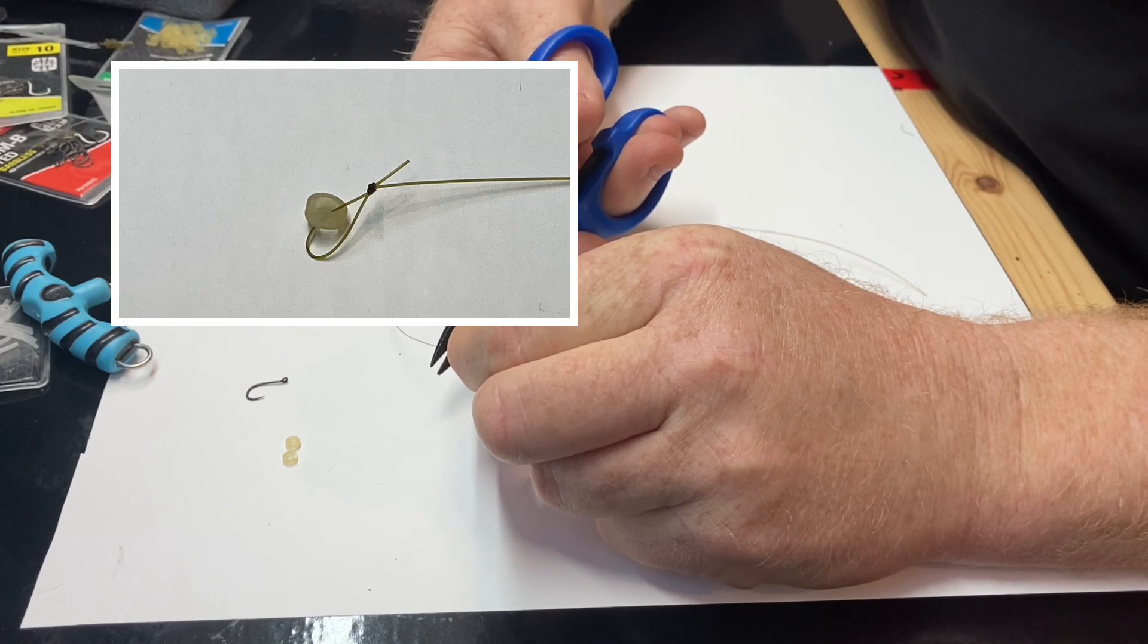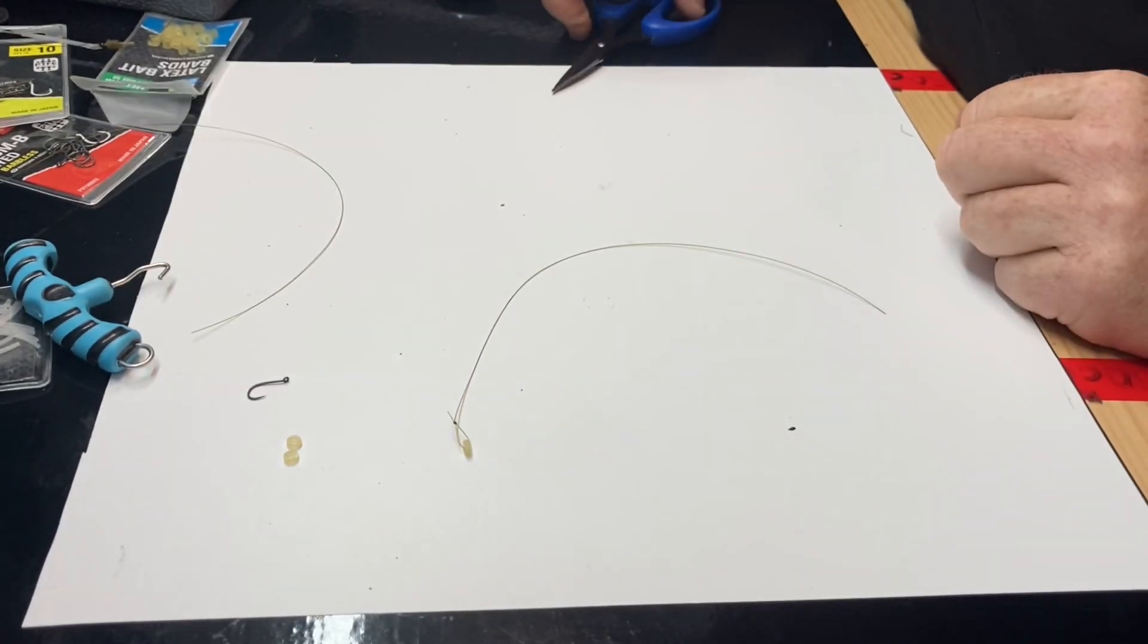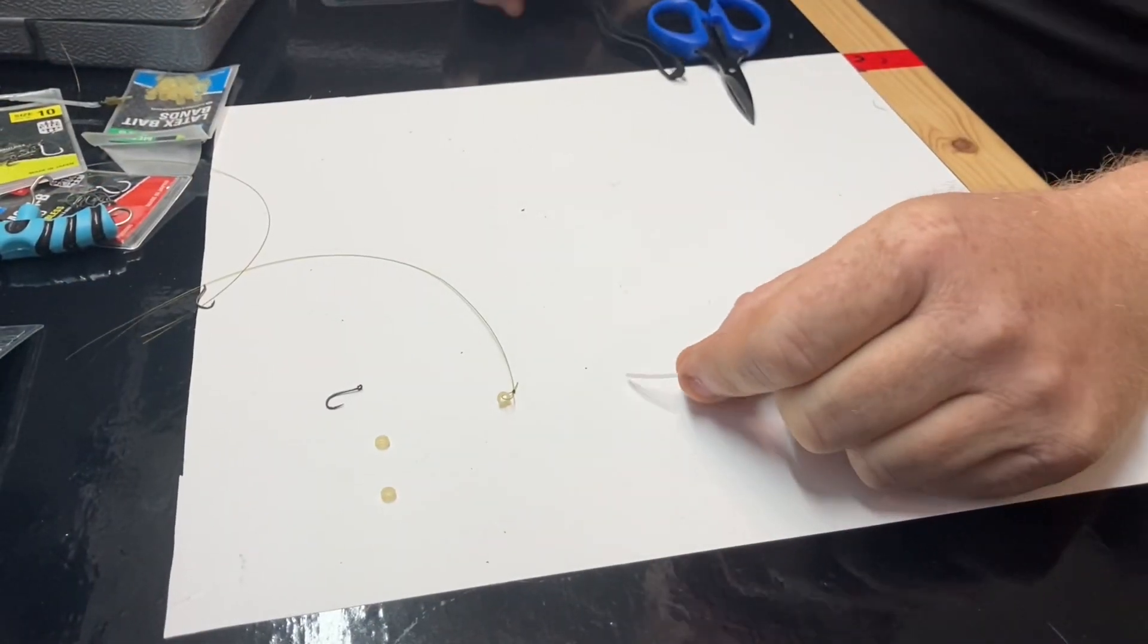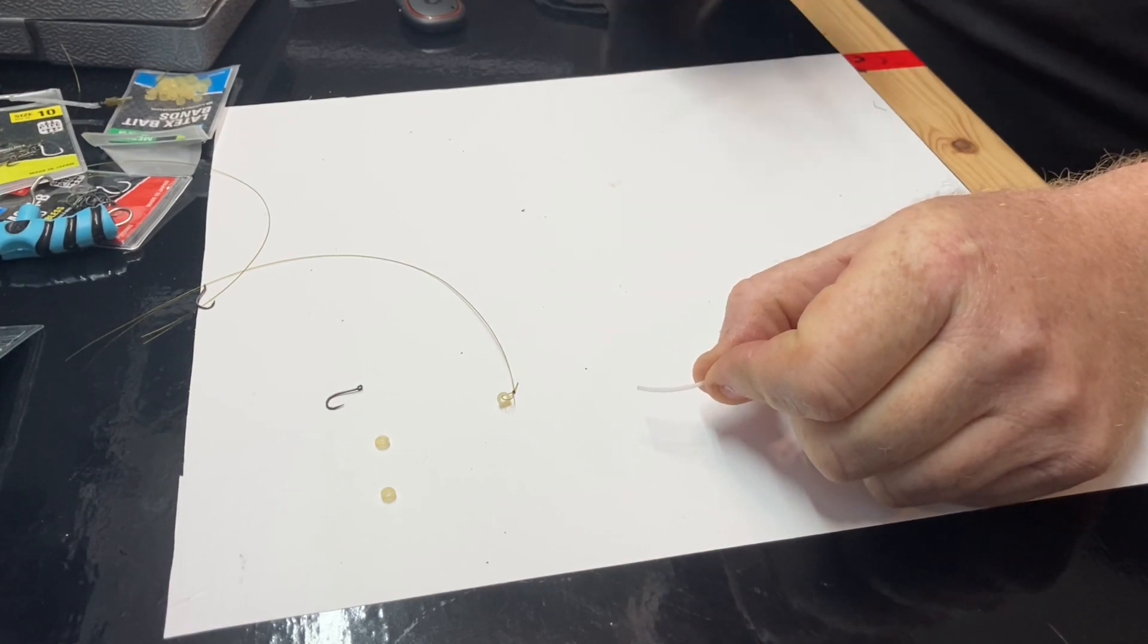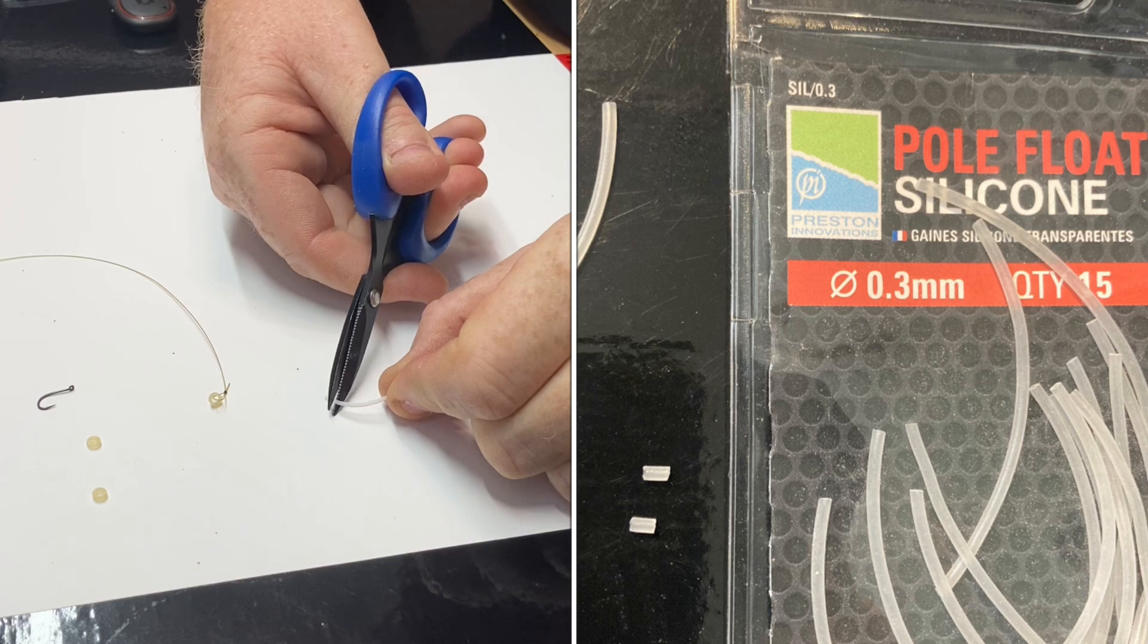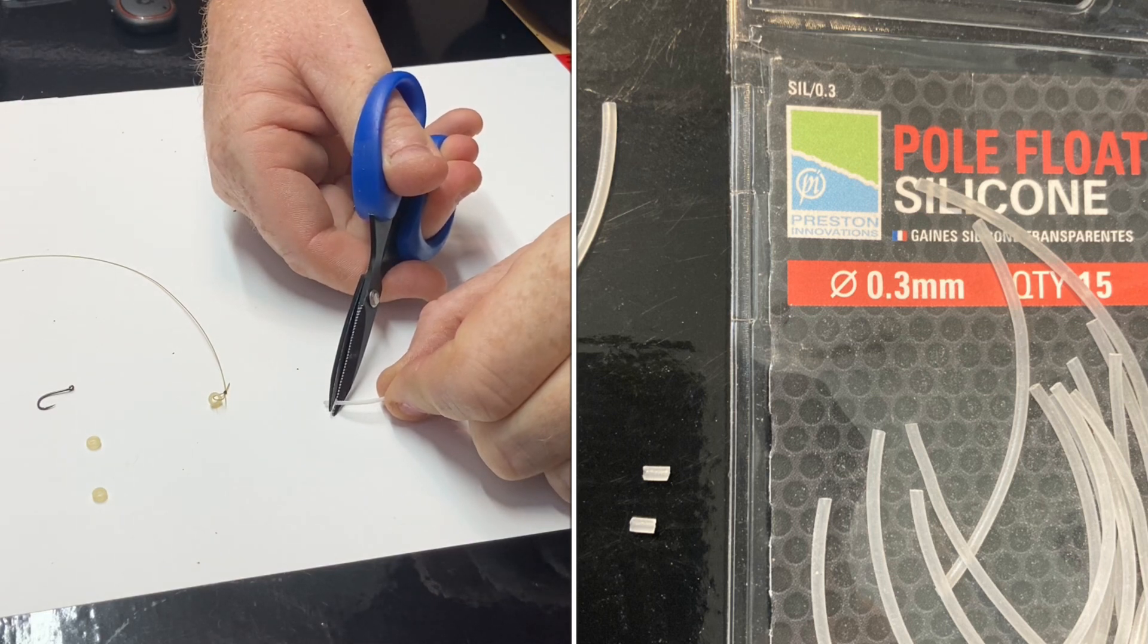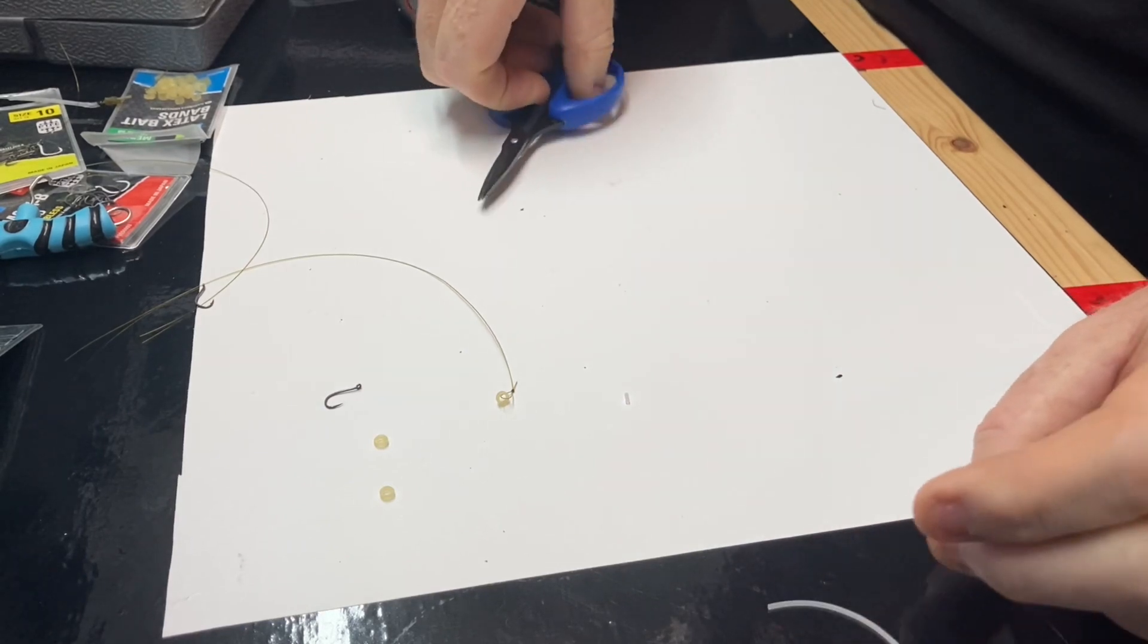This next stage is totally down to the individual. You don't have to do this, but I like to put a little bit of silicone on the shaft of my hook. I'm just going to cut a tiny piece of 0.3 of a millimeter silicone pole silicone so I can slide that onto my hook.